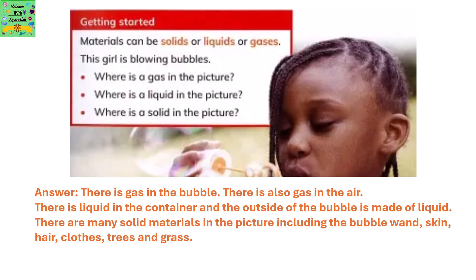There is gas present in the bubble. There is also gas in the air. There is liquid in the container and outside the bubble is made of liquid. There are many solid particles in the picture including the bubble wand, skin, hair, clothes, trees and grass.